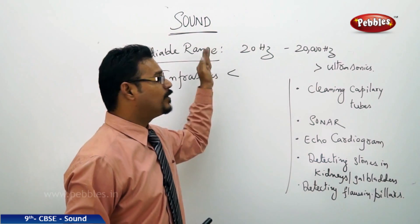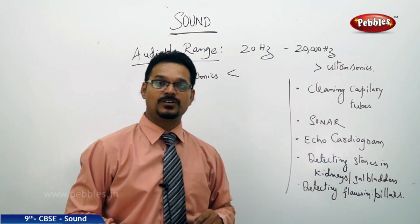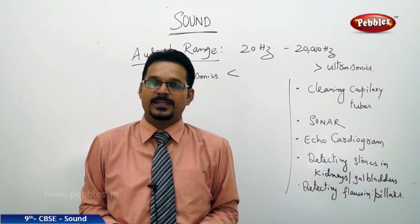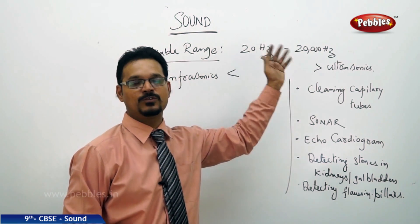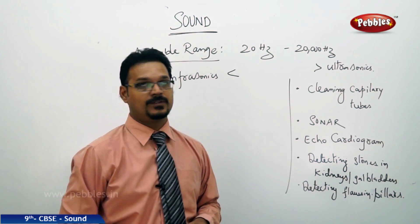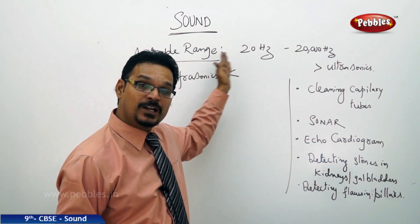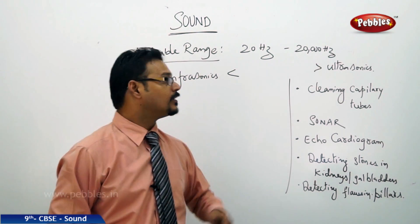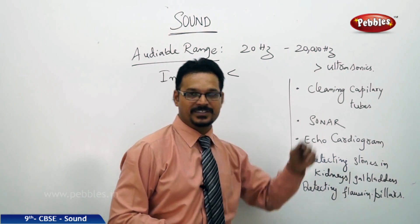Less than 20 Hertz, you can't hear. More than 20,000 Hertz, you also can't hear. As human beings, we can produce and hear within 20 Hertz to 20,000 Hertz — that's called the audible range. Sound waves less than 20 Hertz are called infrasonics, and those more than 20,000 Hertz are called ultrasonics.